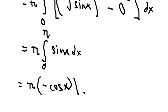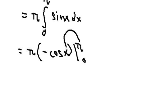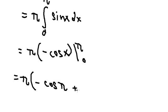We put the bounds from zero to pi. Now we put pi in here, zero in here, and now we have the final answer of 2π. This is the end, thank you for watching.